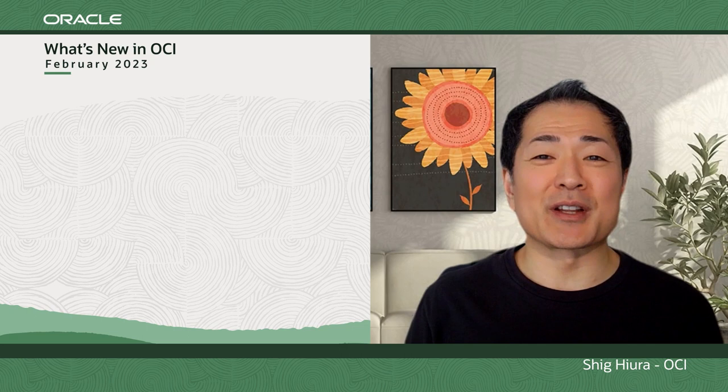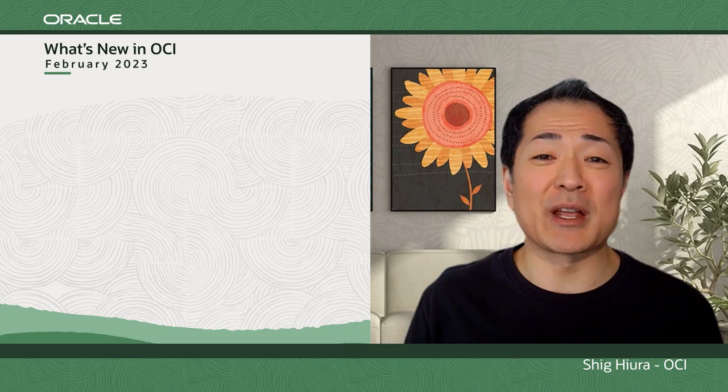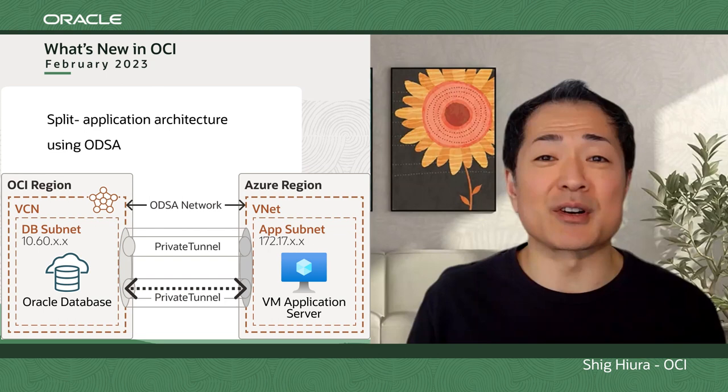That's all from me. Over to you, Shig. Thanks, Mark. The Oracle Database Service from Microsoft Azure provides an easy way to connect applications running on Azure with Oracle Database Services on OCI. If this kind of multi-cloud architecture is new to you, or you're looking for best practices, a couple of new blogs may help. Our first blog provides guidance on implementing a split application architecture using ODSA. ODSA's automation greatly simplifies setting up the connection between an application on Azure with an Oracle Database Service and ensures a secure private tunnel across the high-speed interconnect.